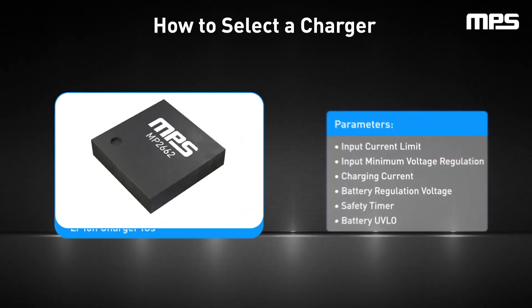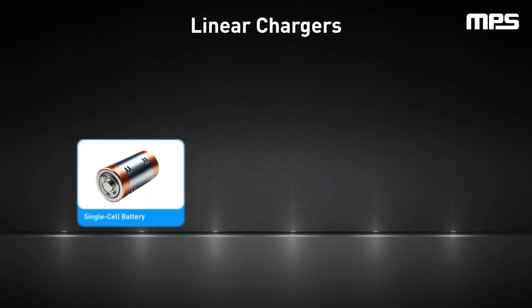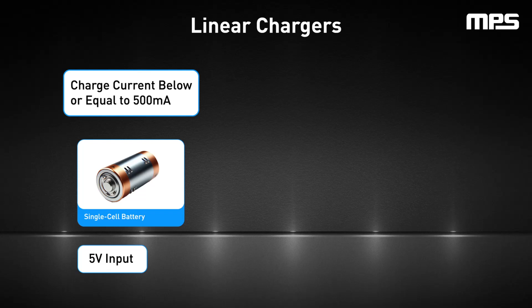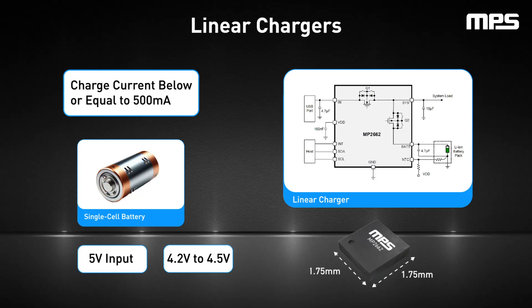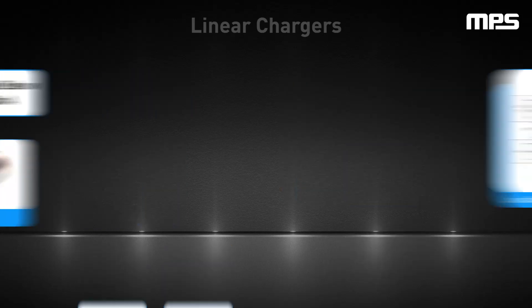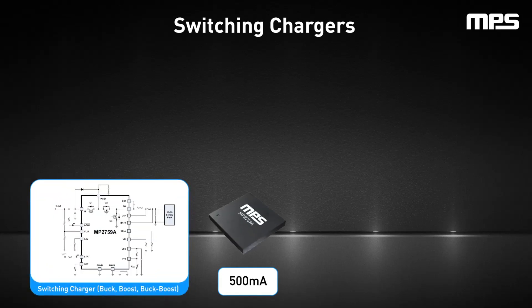The right charger topology for the design can be determined based on the application parameters. For a single-cell battery pack with a 5-volt input and a charge current below or equal to 500 milliamps, choose a linear charger. In general, single-cell battery packs have a maximum voltage between 4.2 volts and 4.5 volts. Depending on the system's design and thermal performance, a linear charger may have a maximum current that is above or below the expected value. If the charge current exceeds 500 milliamps, it is recommended to use a switching charger.